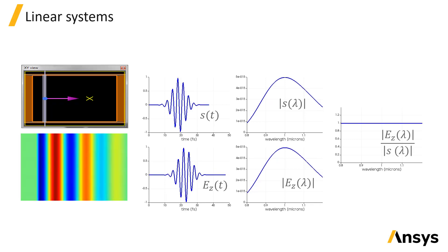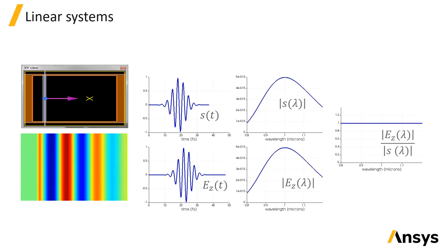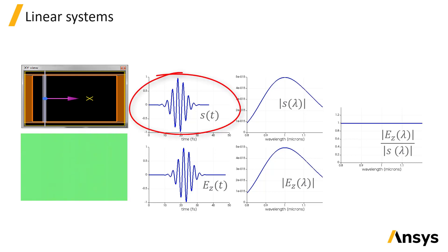Let's take a look practically at what this means. We will consider a simulation of a plane wave polarized along the z-axis in free space. If we watch a movie of the electric field in the time domain, we can see the short source pulse that is used to excite the system. We can plot both the source pulse and the electric field recorded by a point-time monitor.